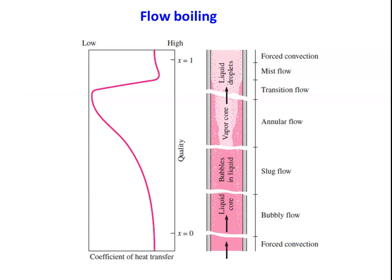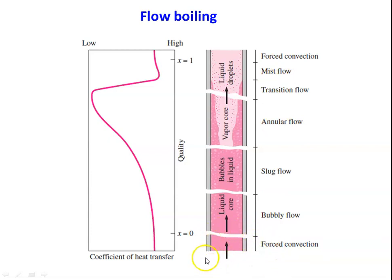Flow boiling occurs in a tube. The fluid enters at the bottom, flows vertically upward, and leaves at the top. The first region is forced convection in liquid phase — the fluid is entirely liquid, the pipe is heated, and heat is transferred to the water. The forced convection correlation for internal flow that we studied earlier is applicable here.